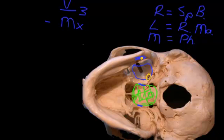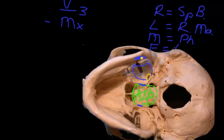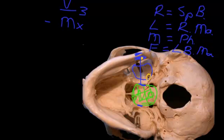The last surface of the infratemporal fossa is the floor. There is actually no true floor to it, but for the purposes of anatomical regions, the lower border of the mandible region is deemed to be the floor — a plane running across this way. To give you an idea of the volume of this region, it's really about the size of a thickened thumb in volume, and as I said, 90% of this is taken up by muscle.